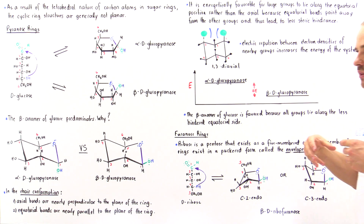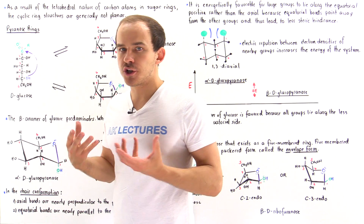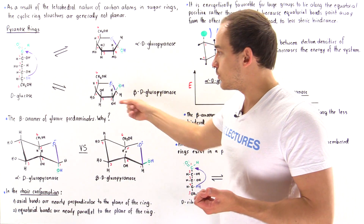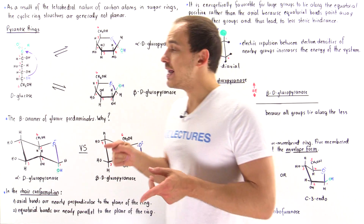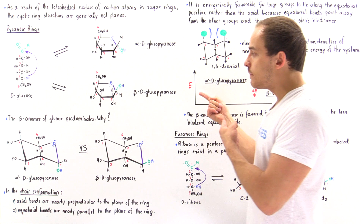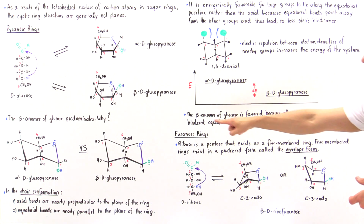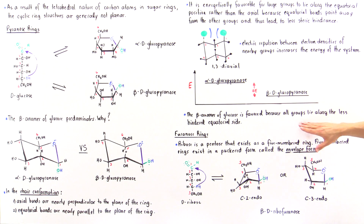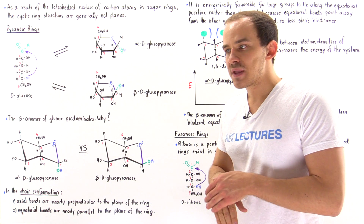So generally speaking, in six-membered sugar molecules, it's the beta anomer of glucose that will predominate over the alpha one. The beta anomer of glucose is favored because all the groups lie along the less sterically hindered equatorial side.